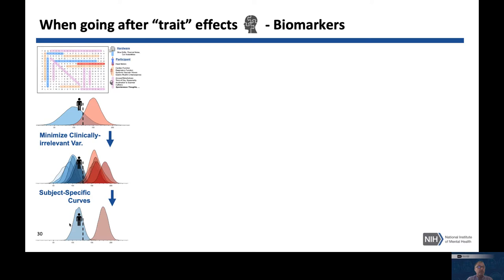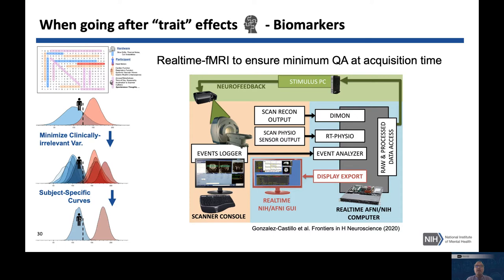A few hints on how to get there: I really think real-time fMRI is going to play a key role. People tend to think of it mostly for neurofeedback, but once you have it running, it is an amazing tool that allows you to control data quality as you scan, monitor whether subjects are moving or falling asleep, and stop and restart the scan to ensure minimum data quality thresholds are met before the subject leaves the scanner.